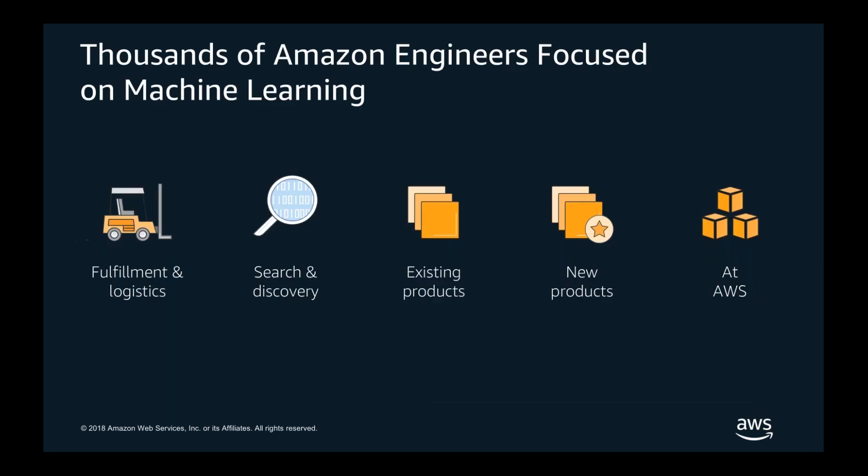Since then, we've grown our team to more than thousands of engineers focused specifically on machine learning today. If we think about the areas we focus that effort on, we could first look at fulfillment and logistics — including Amazon Robotics, formerly Kiva Robotics — about lifting up shelves and racks and bringing those to our pickers in our warehouse operations, as well as monitoring the supply chain and recommending best routing for product.